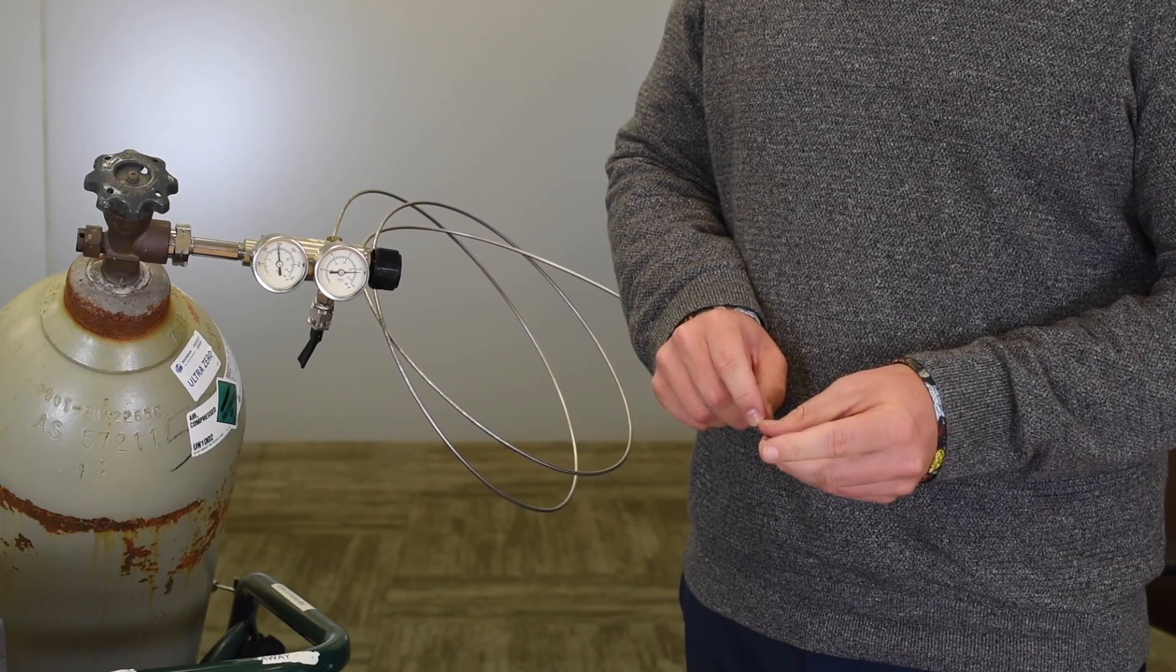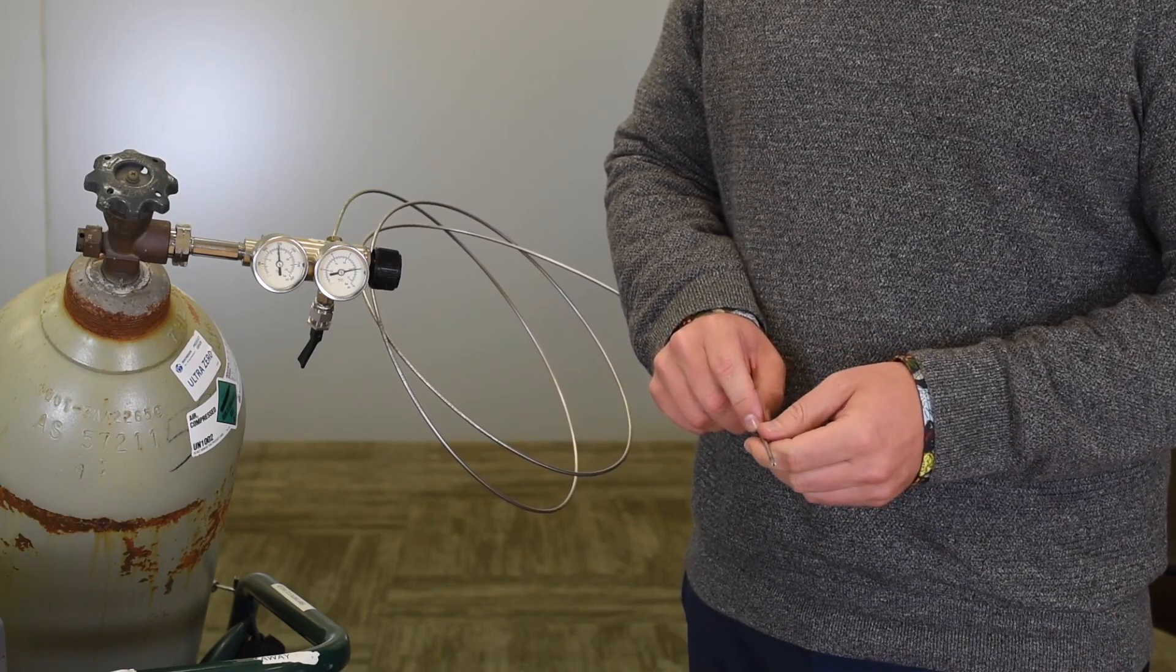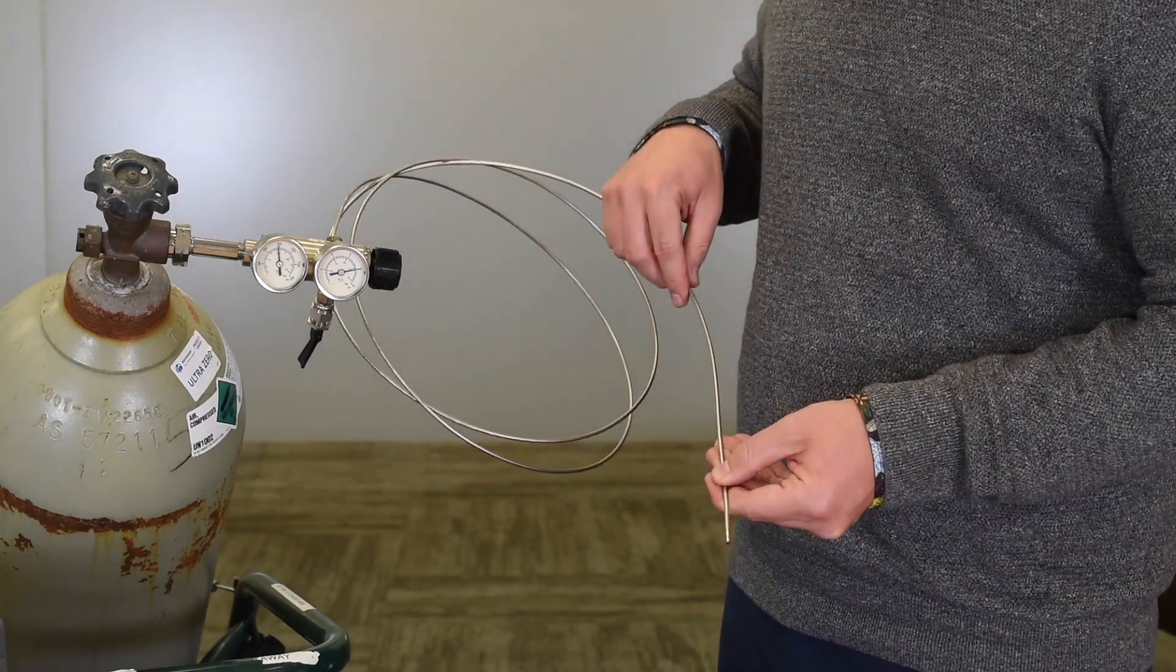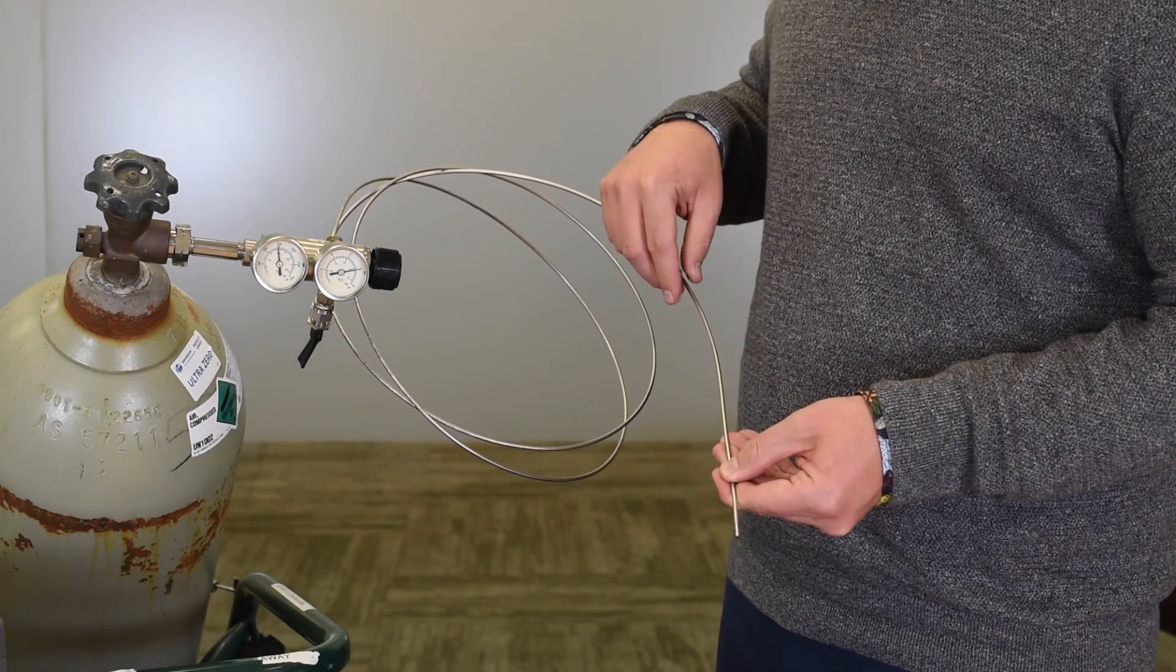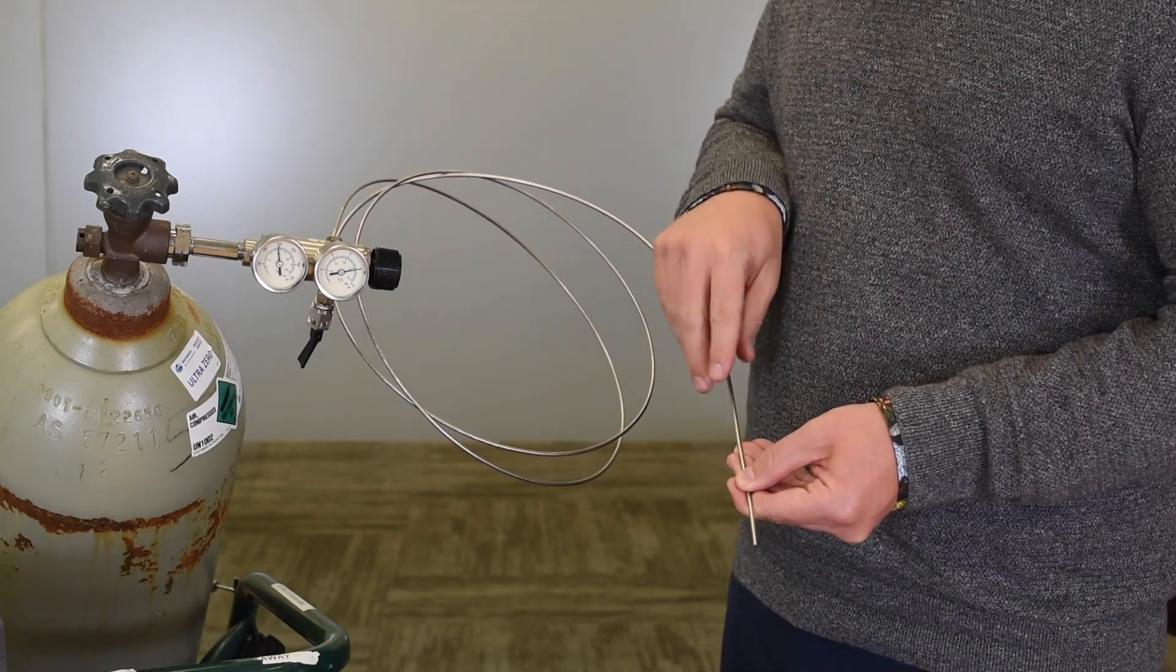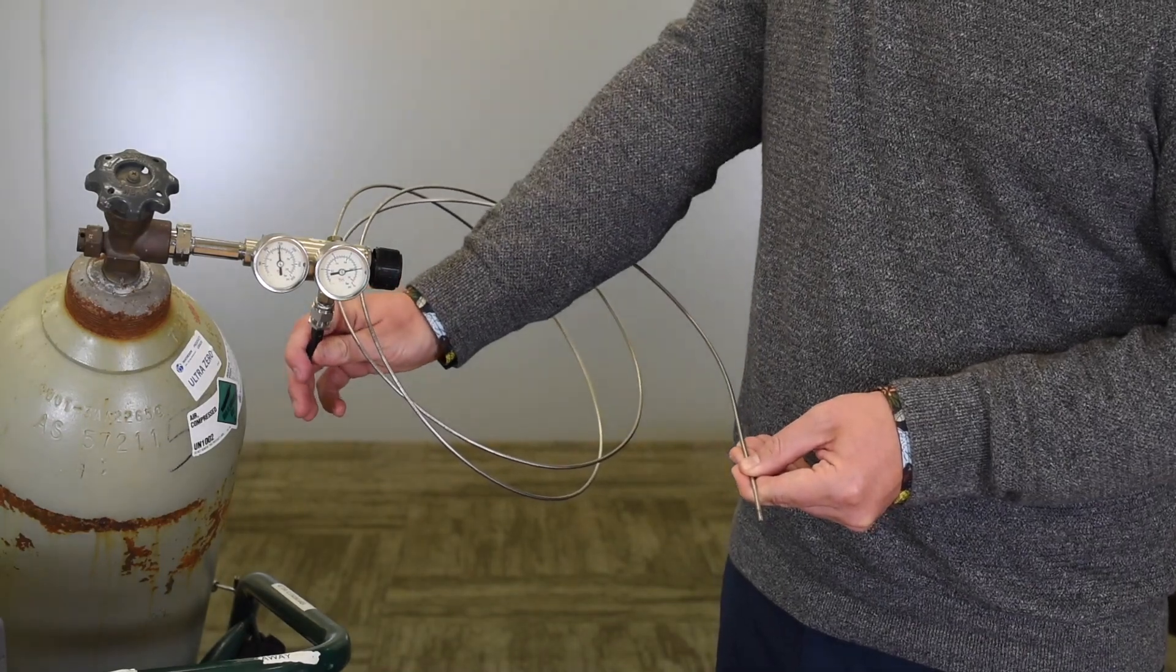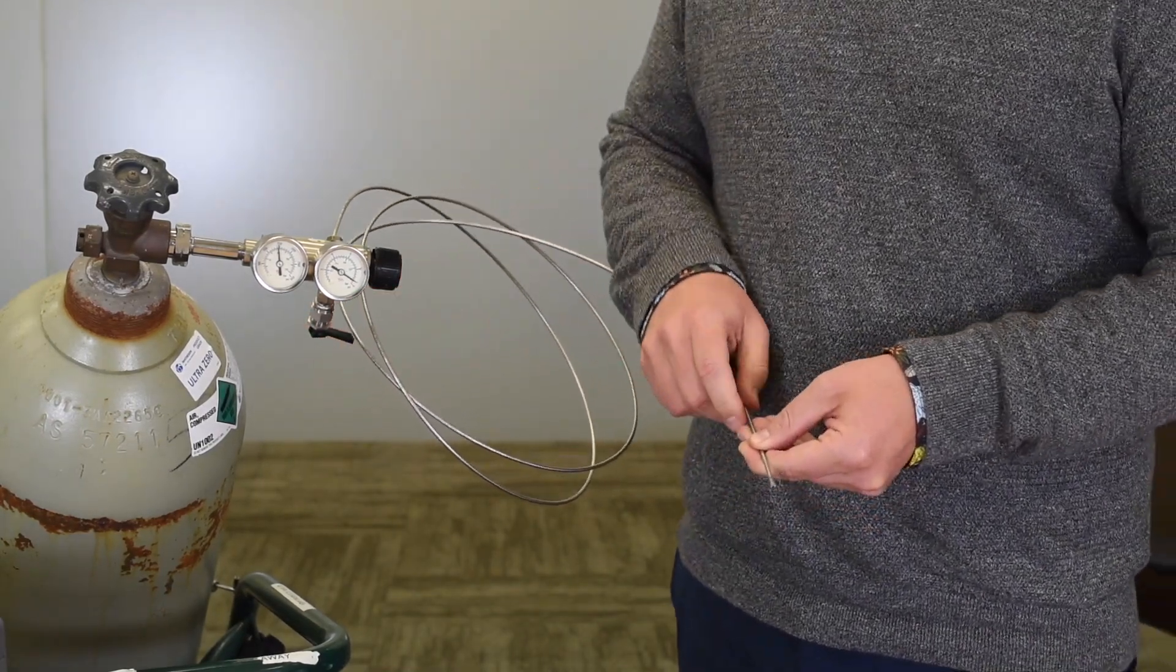You should hear gas flowing. You should be able to verify that by putting your finger on the end. Give it 30 seconds, perhaps a minute, and make sure that you orient it so that any filings actually make their way out and don't get stuck in the coils. At the end, turn that toggle valve back off.